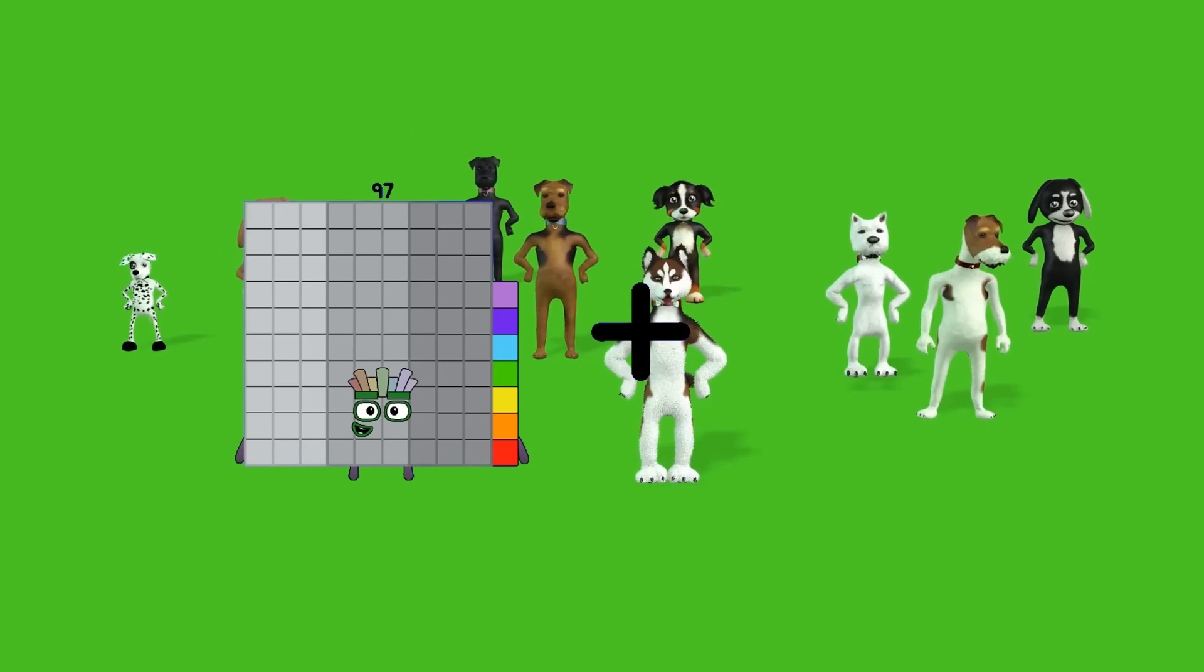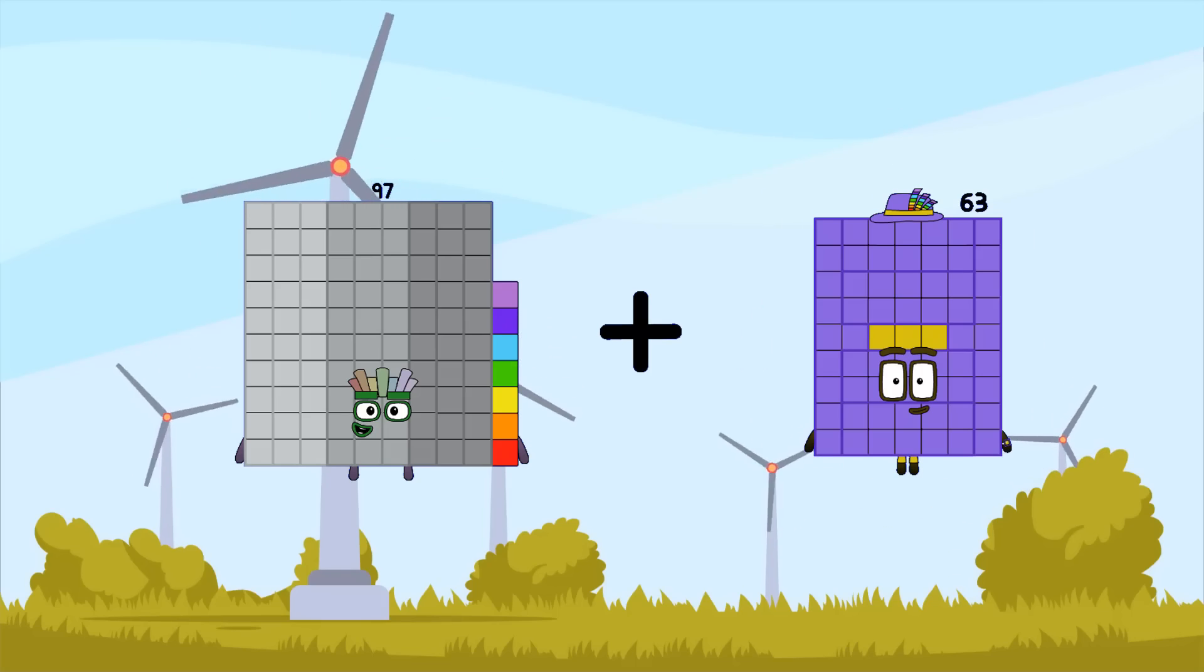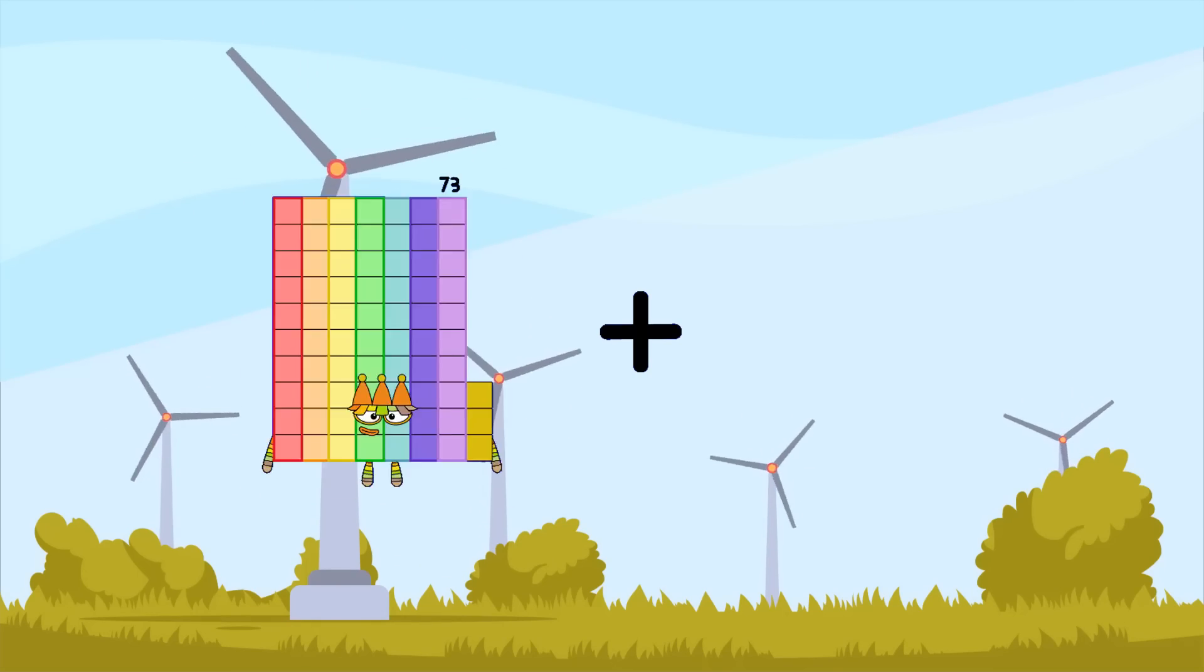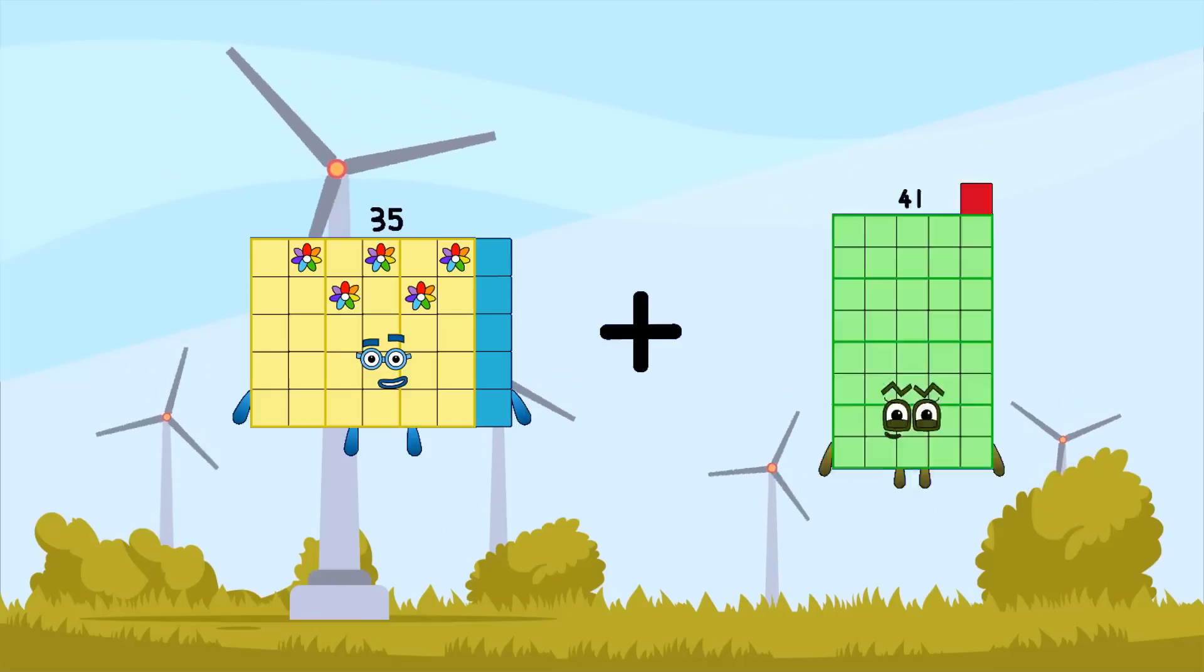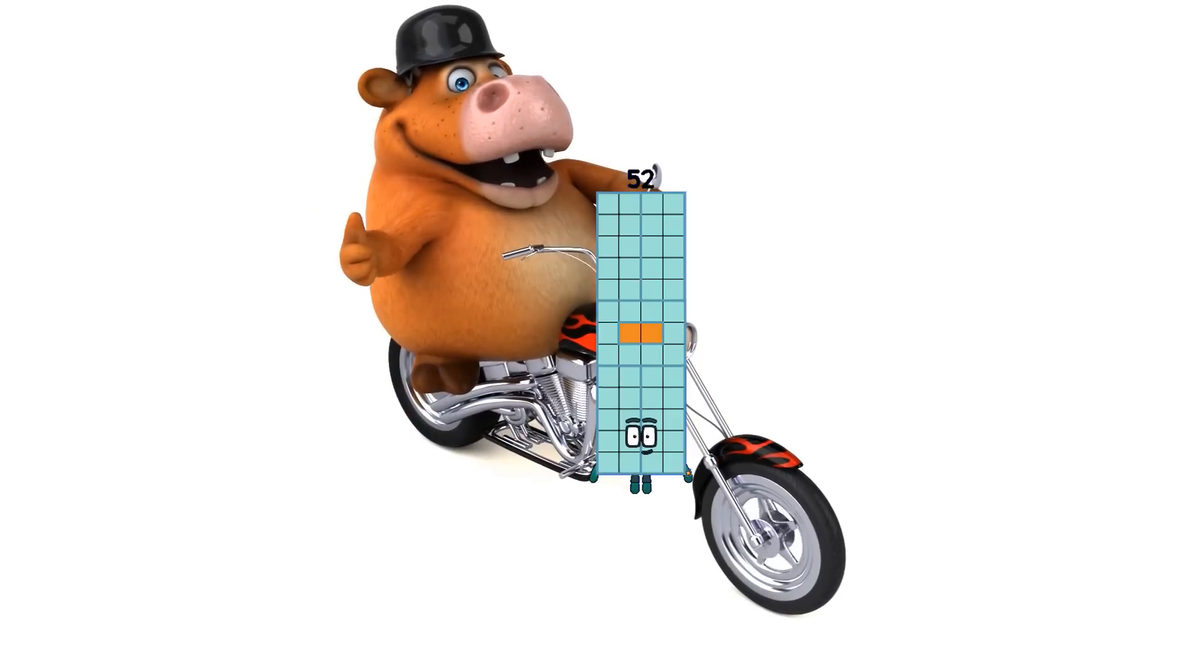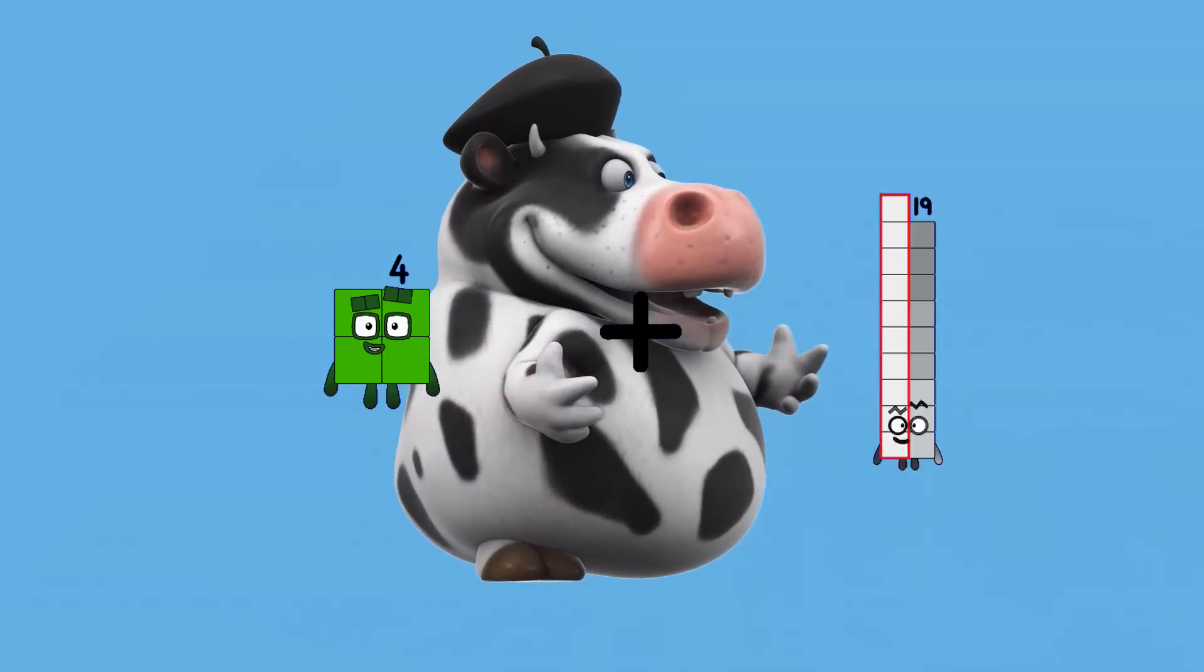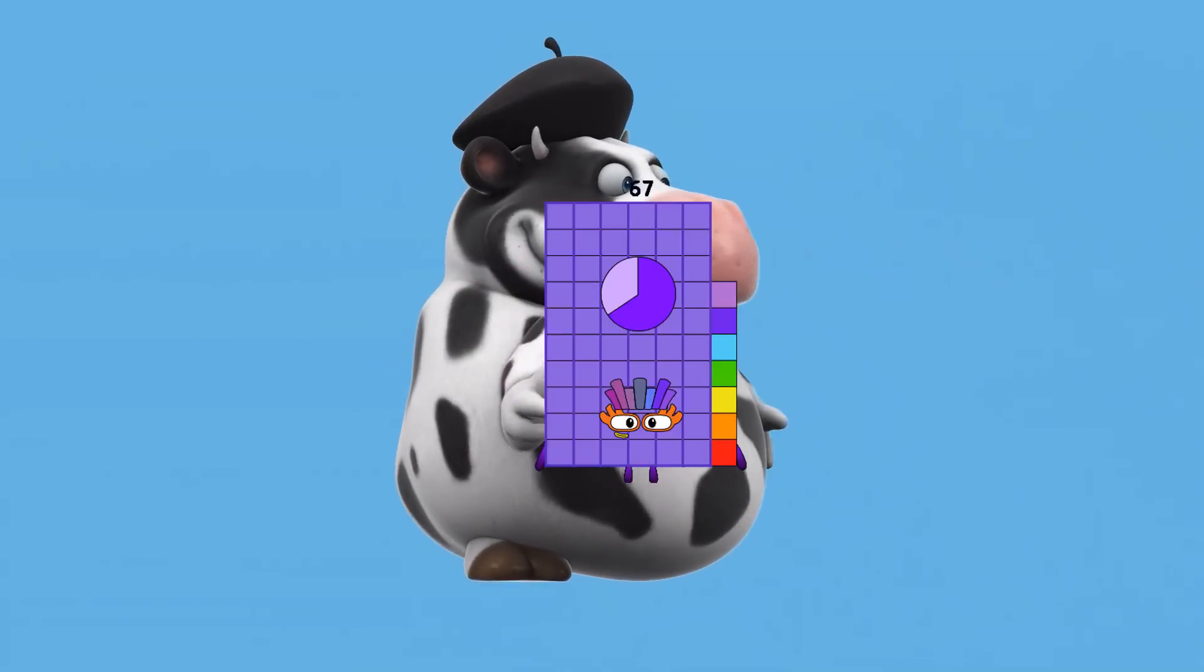97 plus 63 equals 160. 35 plus 17 equals 52. 4 plus 63 equals 67.